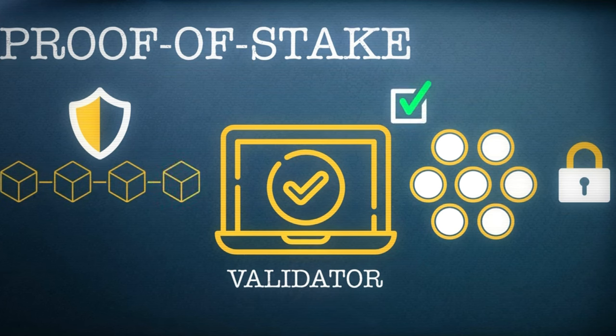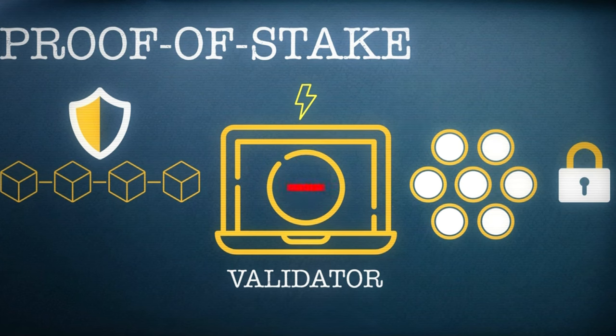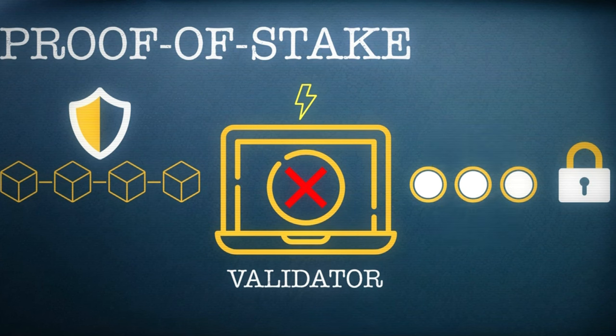Although this uses a lot less energy than proof of work, there are downsides. One of them is that validators can end up being penalized if they act against the network's best interests, meaning their stake is slashed and they lose crypto.